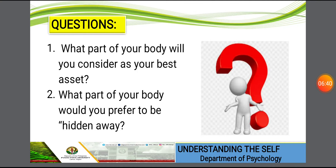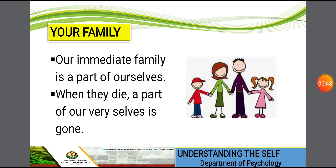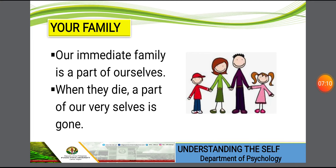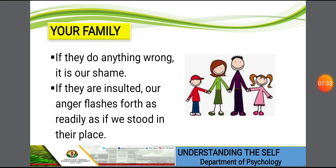Aside from your body, your family is part of your material self. Our immediate family is an extension of ourselves. When they die, a part of our very selves is gone. We are identified through our family — even in older times, a child would be identified through their father's name or surname. We are really identified through our family.